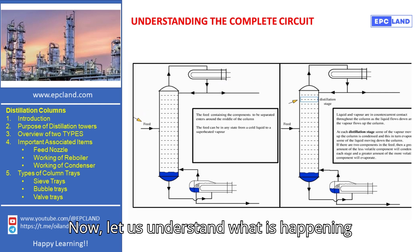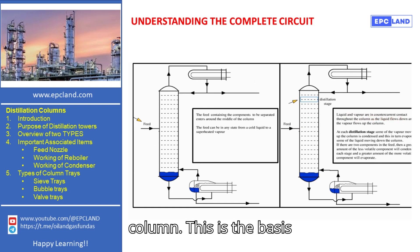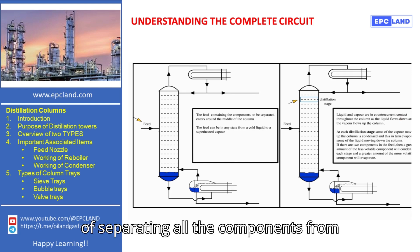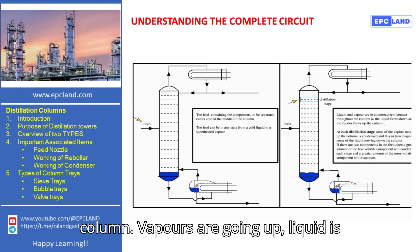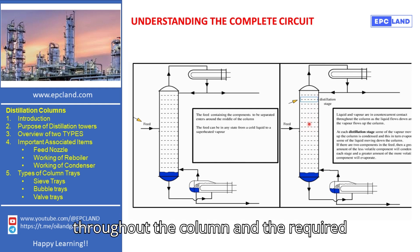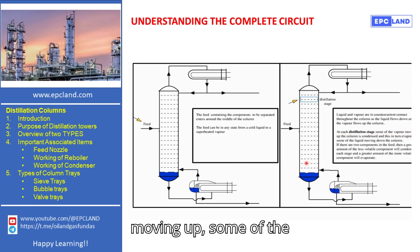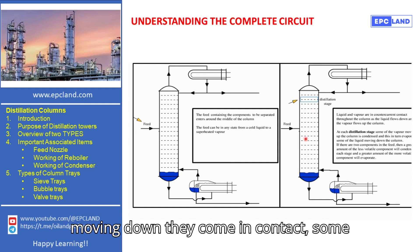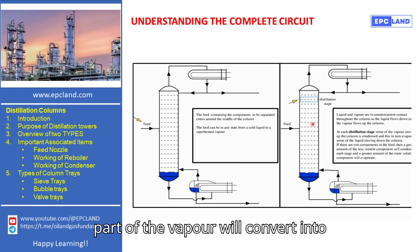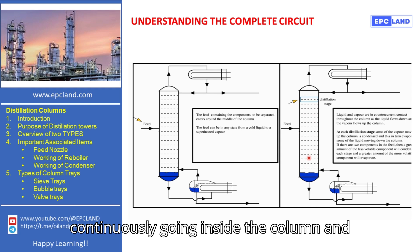Once this feed is entering into the column, liquid and vapor are in counter-current contact throughout the column. This is the basis of separating all the components from the feed. Vapors are going up, liquid is going down — they are in contact throughout the column. Some of the vapors moving up are condensed, which in turn vaporizes some of the liquid. When vapors moving up and liquid moving down come in contact, some part of the vapors will convert into condensate and some condensate will convert into vapor.